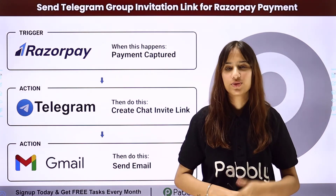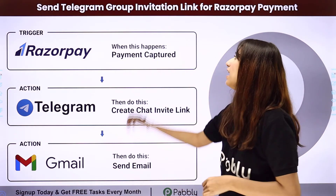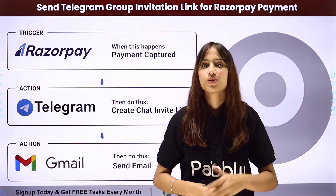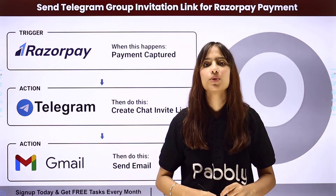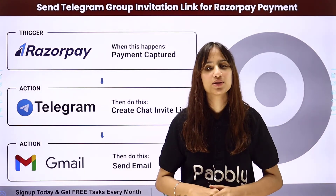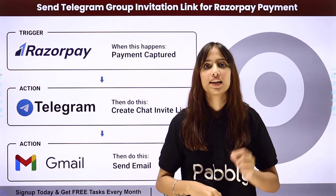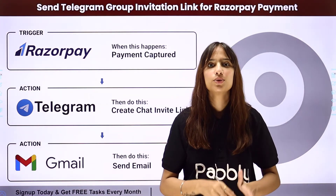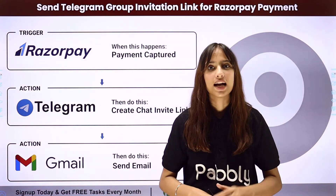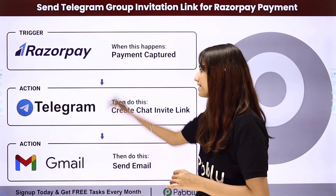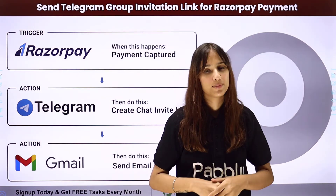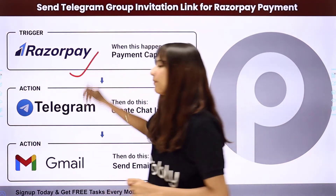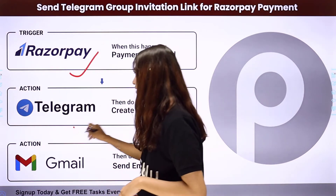Hello everyone, welcome back to Pabbly. In today's video we are going to understand how to send a Telegram group invitation link for RazorPay payment. Whenever I receive a RazorPay payment for a specific product, I want to send a chat invitation link to that person through Gmail. To do this, I need to build an integration between these applications using Pabbly Connect. My trigger application will be RazorPay, and my action applications will be Telegram and Gmail.